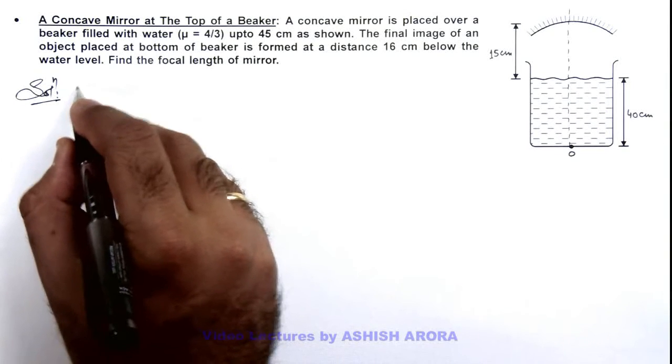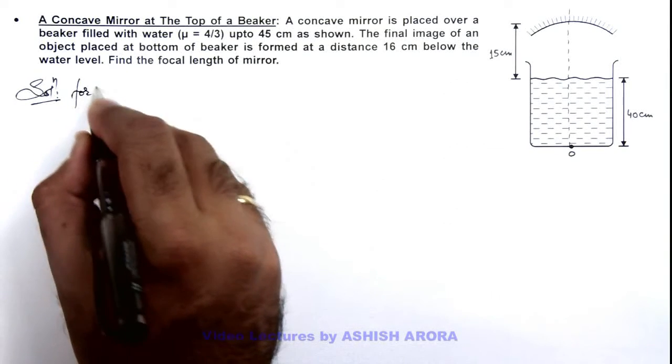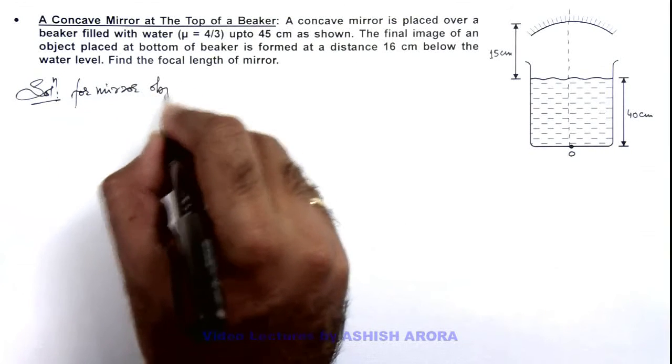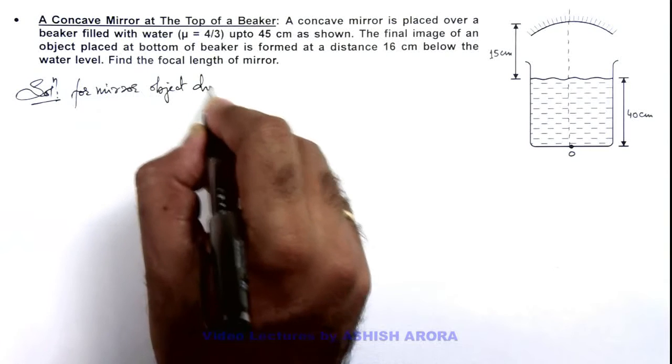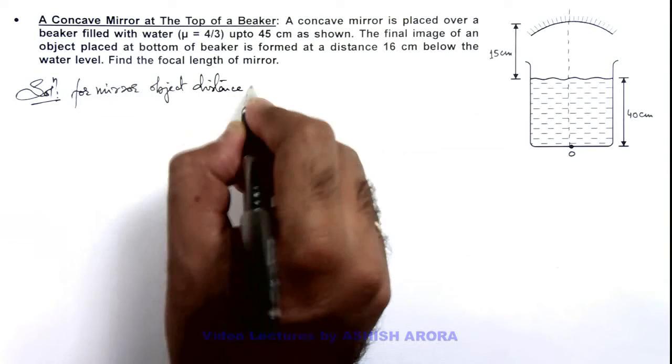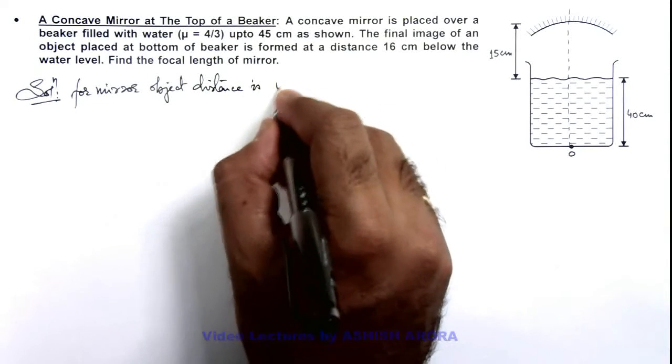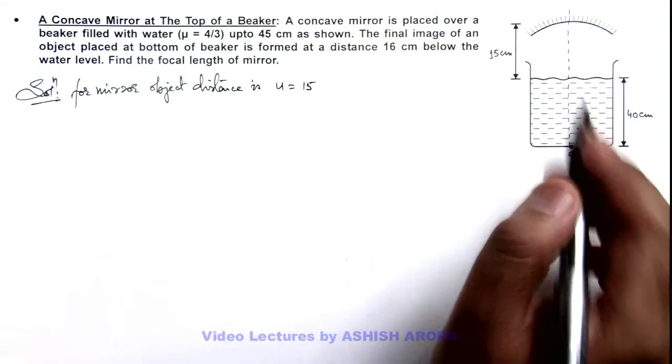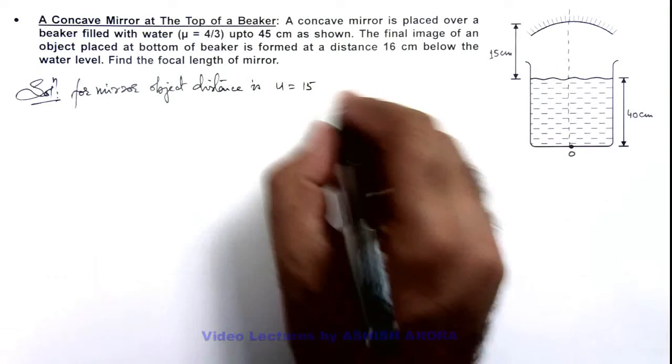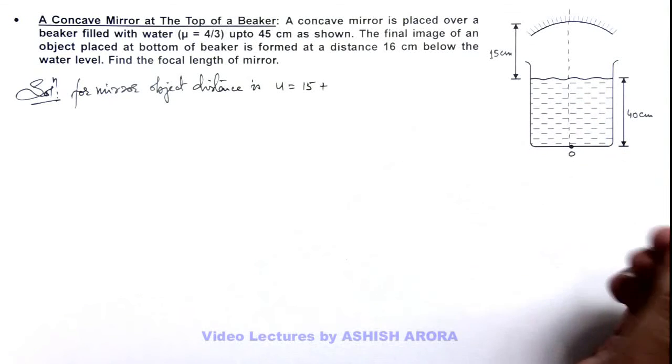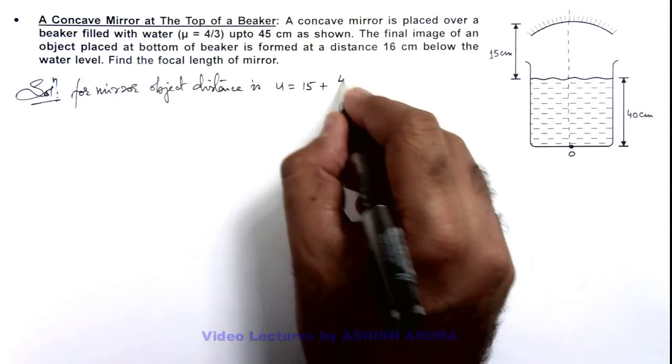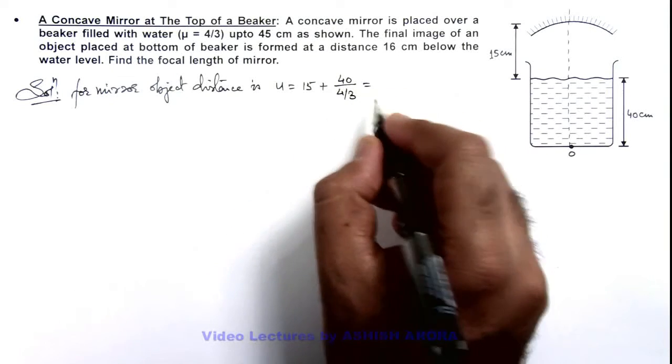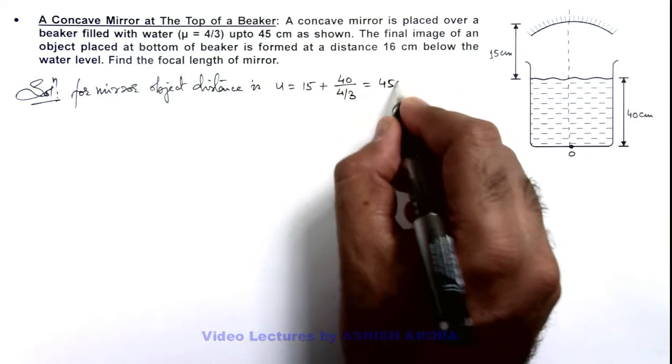So here we can calculate for the mirror, object distance is, this we can take as u, which is this 15 centimeter, the direct length up to the water level, plus the apparent depth which is h by mu. So this will be 40 divided by 4 by 3, that is 30 plus 15, it is 45 centimeter.